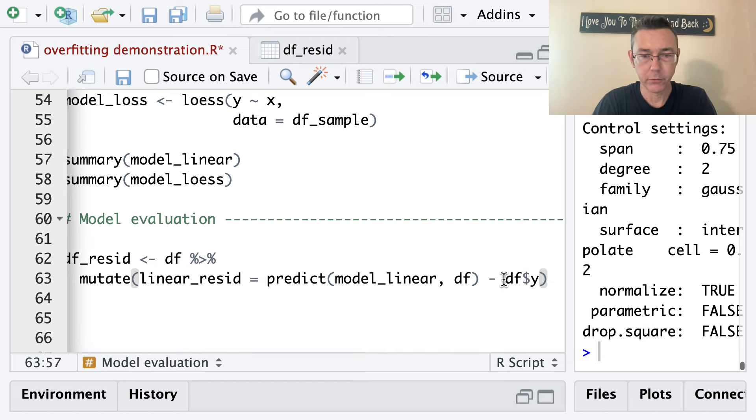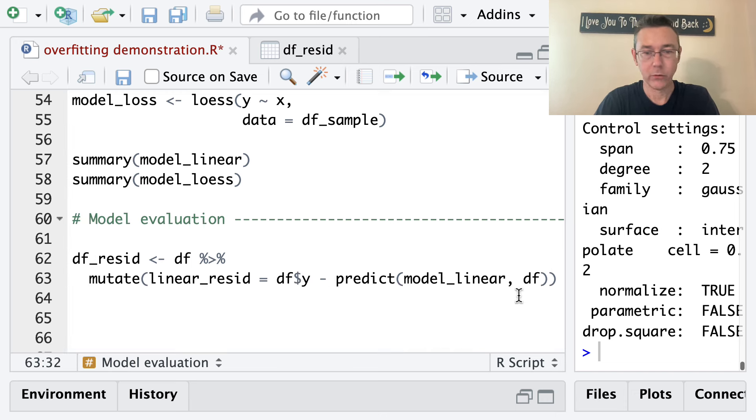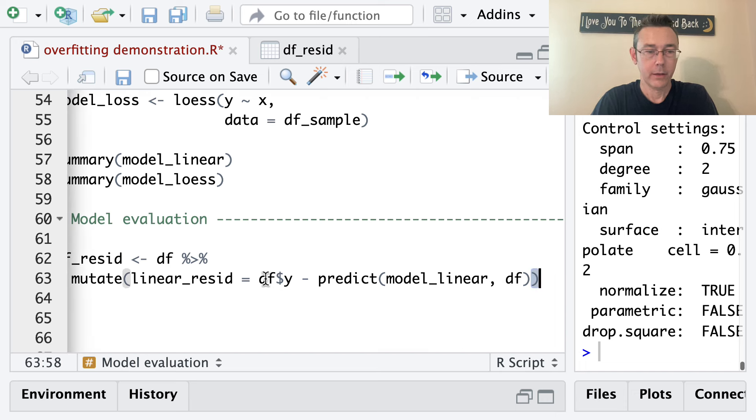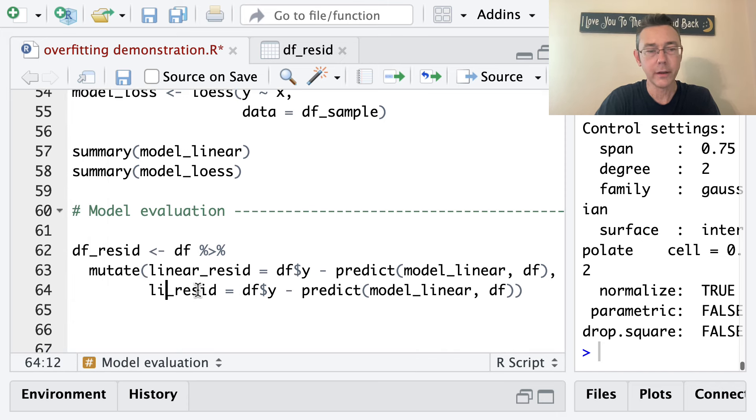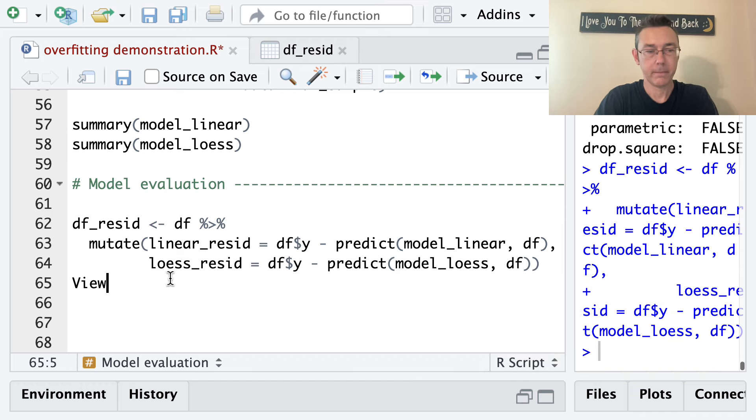And I want to predict on the original data set. So that's going to give me some predicted values. And then I want to actually subtract off the actual value. So df$y. Actual minus predicted is residuals. I've got this backwards. Learn from my mistakes, friends. Okay. Actual minus expected. Great. I think I'm just going to copy and paste this because for the next line, everything's the same except instead of linear_resid, I want loess_resid. And I'll take the actual values, the observed ones, minus the ones that are predicted by the loess model. And let's just take a look at that.